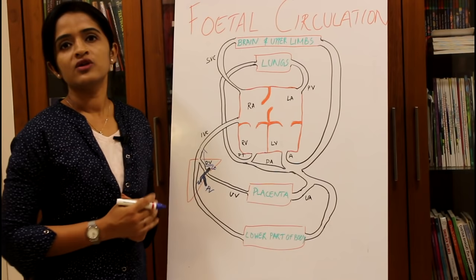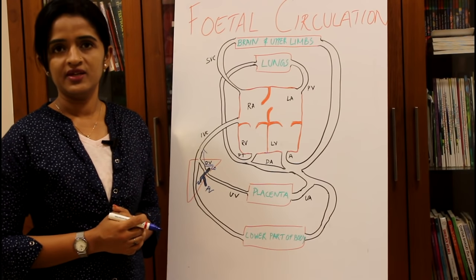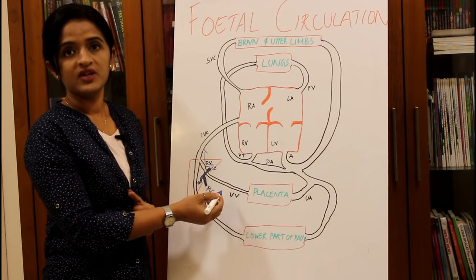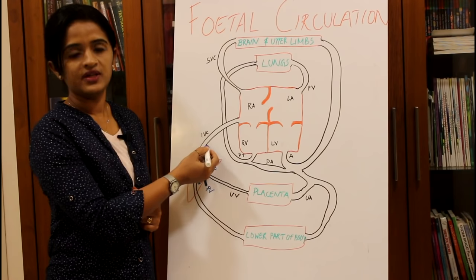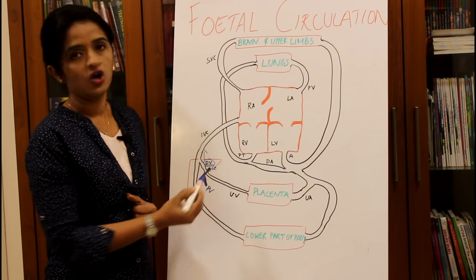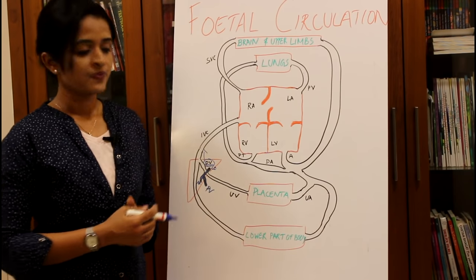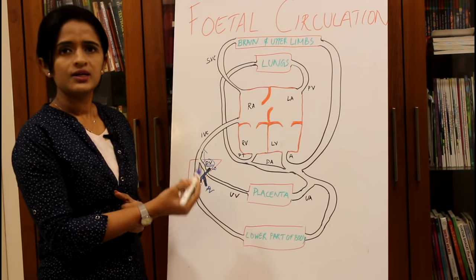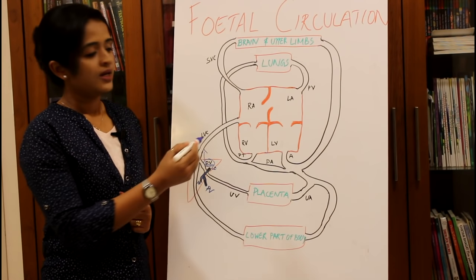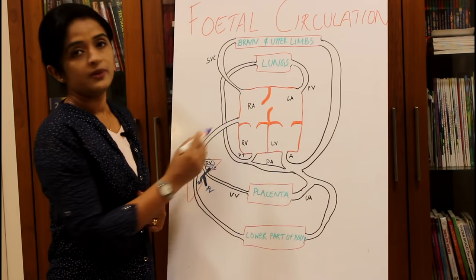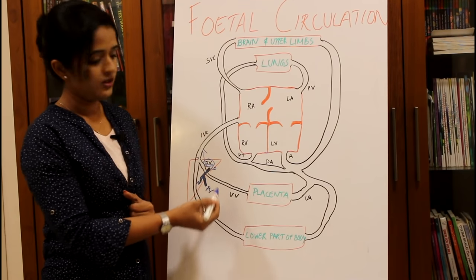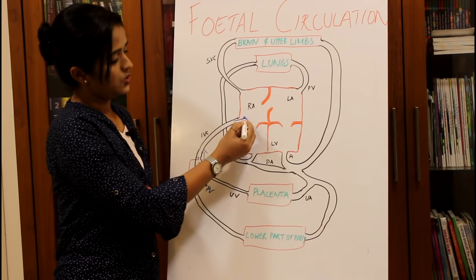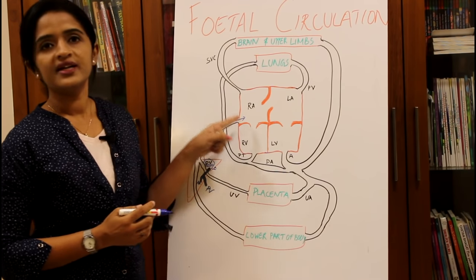A small amount of blood will still enter the liver, but the major quantity of blood from the umbilical vein is shunted to the inferior vena cava through the ductus venosus. The minimal amount entering the liver is again taken back into the inferior vena cava. The inferior vena cava then carries this pure blood into the right atrium.